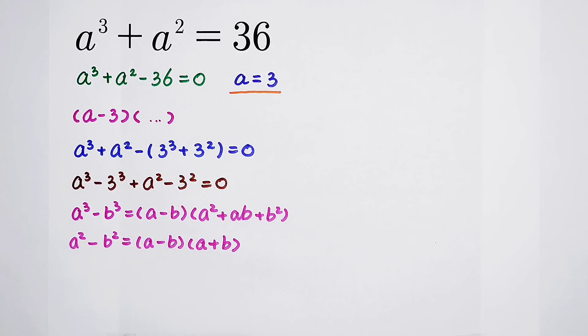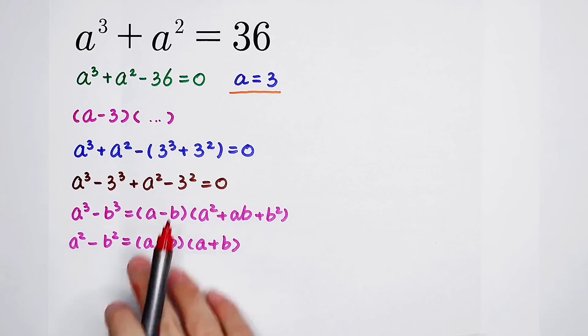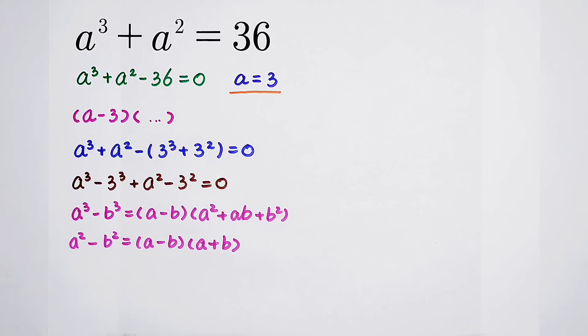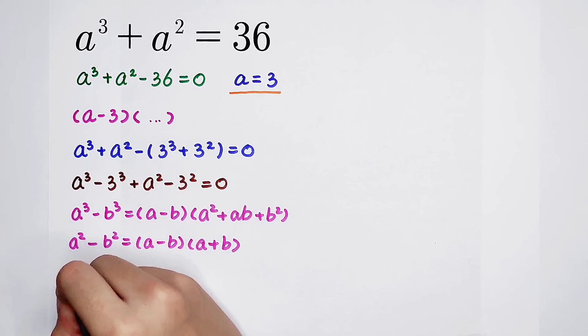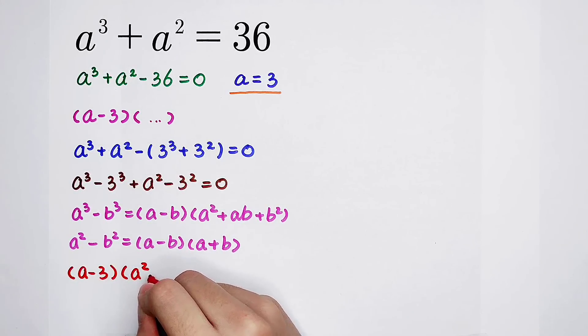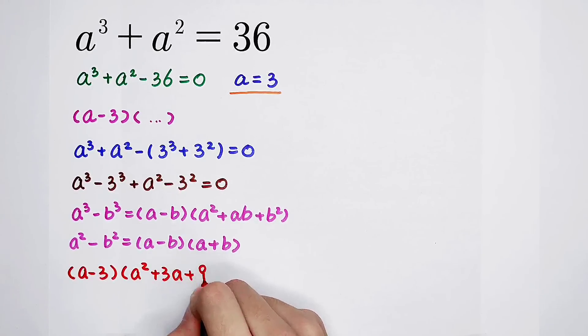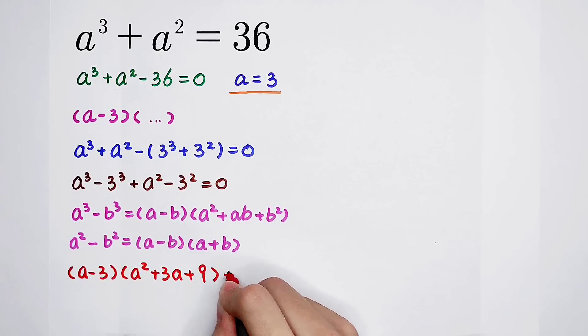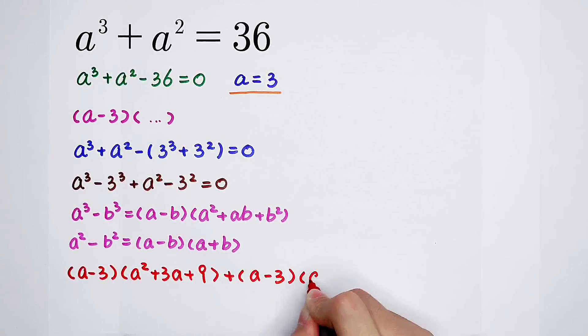Okay, with these two formulas, what will the left-hand side become? It will become (a minus 3) times (a squared plus 3a plus 9) plus (a minus 3) times (a plus 3).